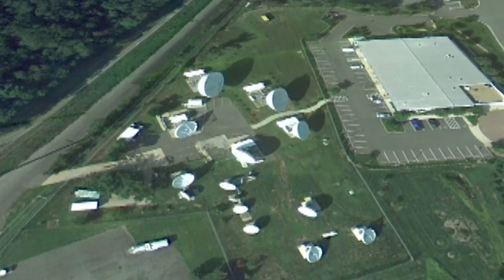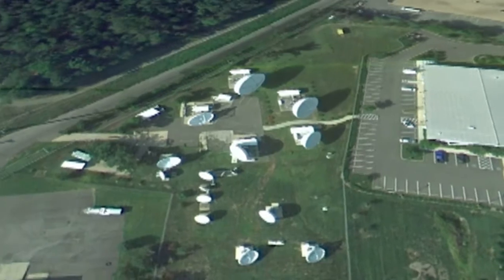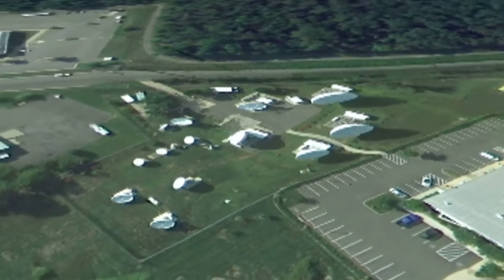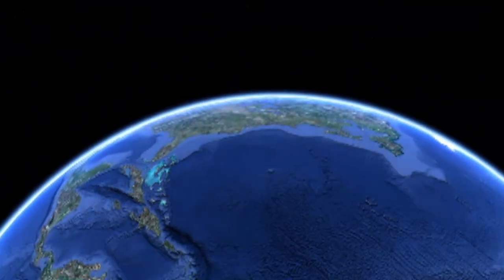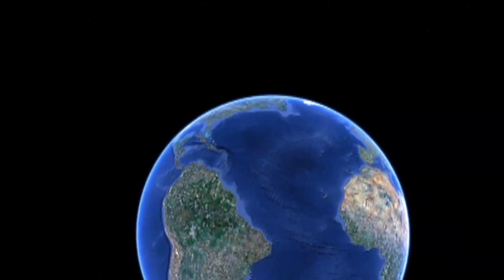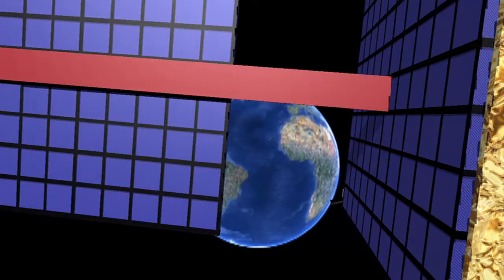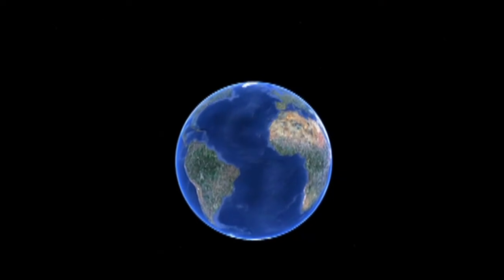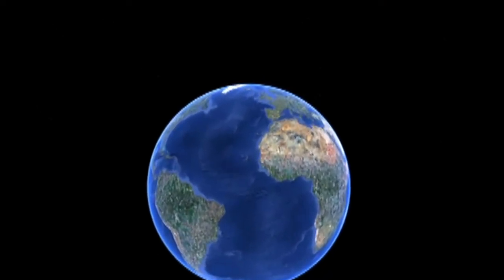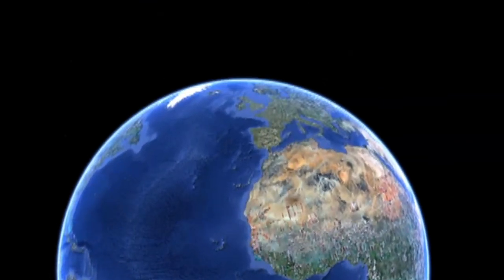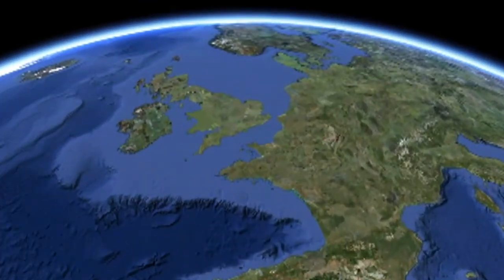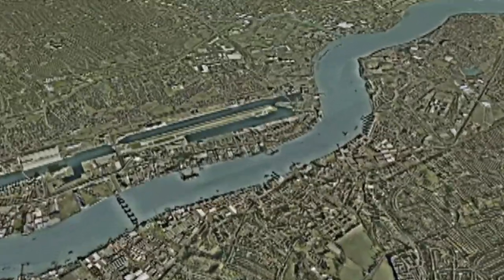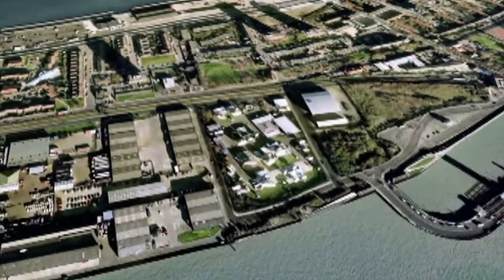Where the signal is again turned around and transmitted back up to a satellite over the Atlantic Ocean, where the signal is received by a satellite in geostationary orbit and turned around and sent back down to the Earth's surface. This time it is received at a downlink station just outside of London, England.